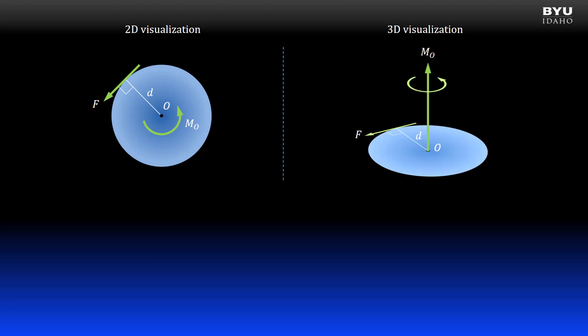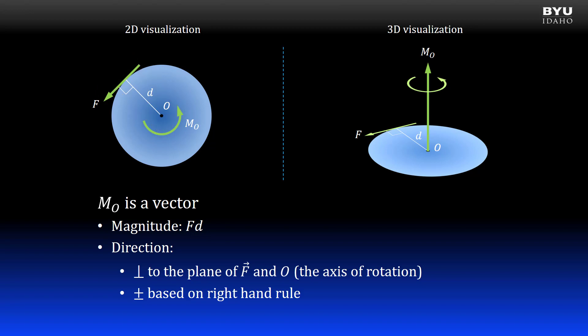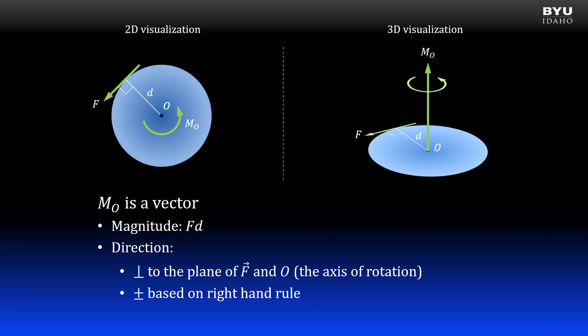We can see that axis if we change our perspective. The moment we form is a vector. It has a magnitude — the force times the perpendicular offset distance from the axis. It also has direction, perpendicular to the plane of the force vector and point O. In other words, its direction is along the axis of rotation. Positive or negative sense is determined by the right-hand rule.